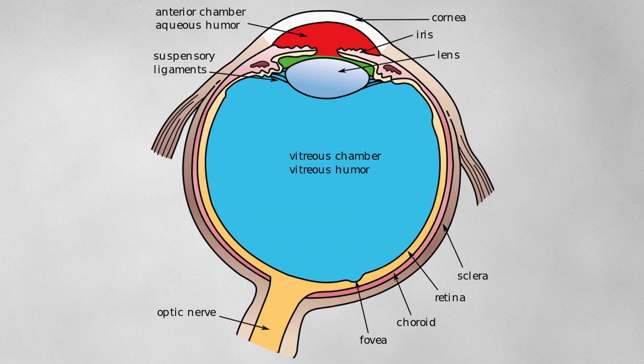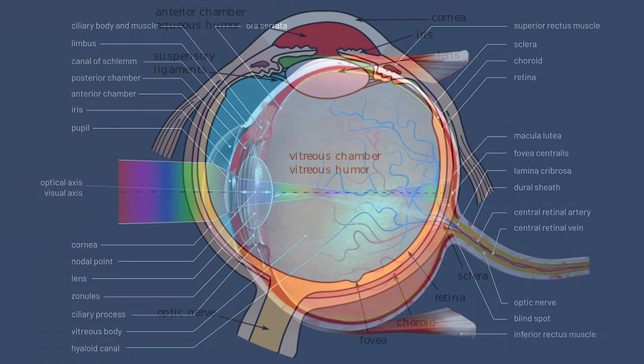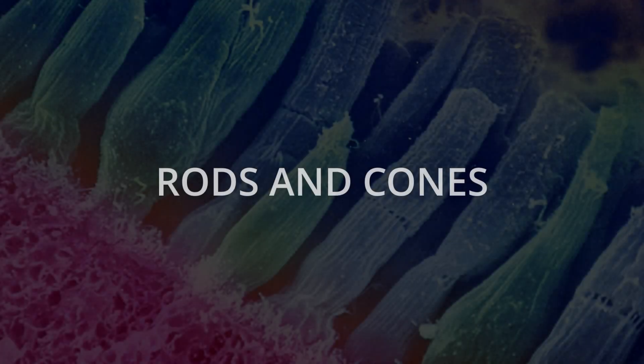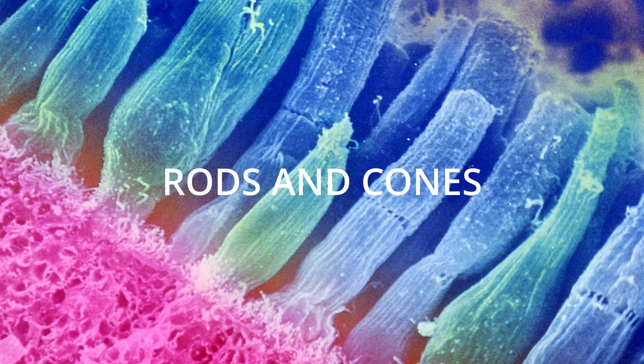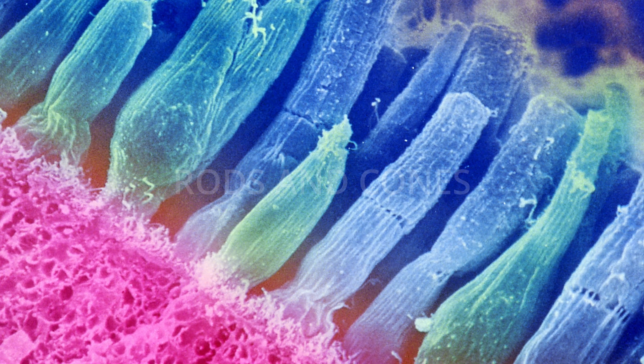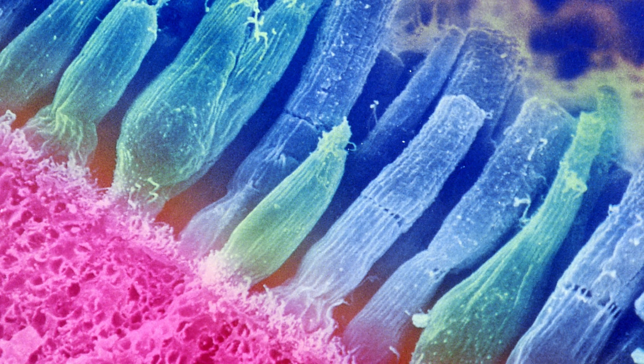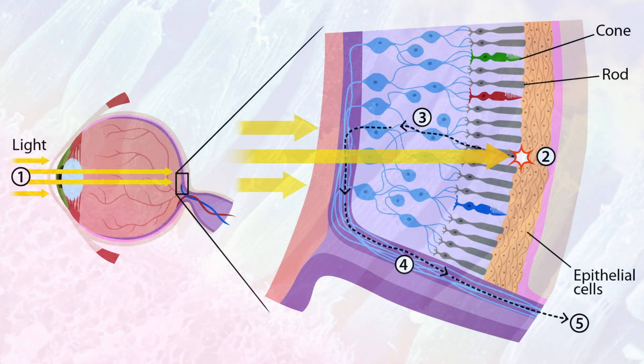Behind the lens is the inner chamber of the eye, filled with a gelatinous substance called the vitreous body. Light must first pass through this substance before it reaches the retina, the layer that covers the back and side walls of the eye's inner chamber. The retina consists of 130 million light-sensitive cells called rods and cones.